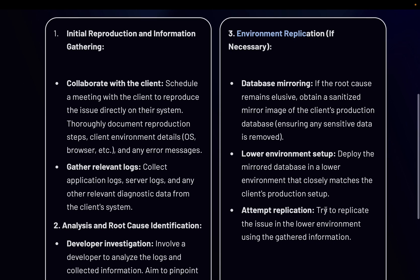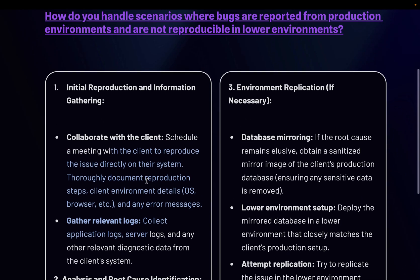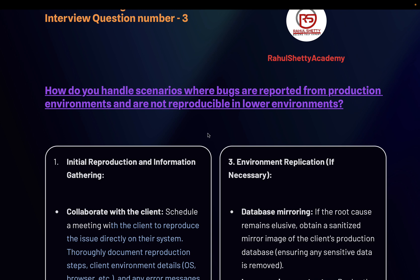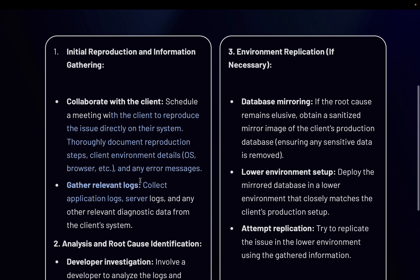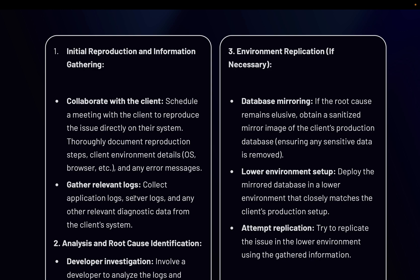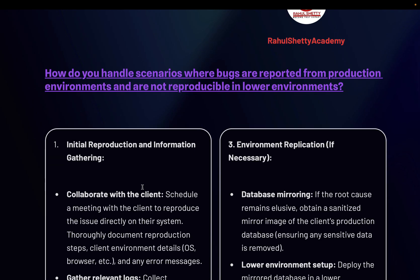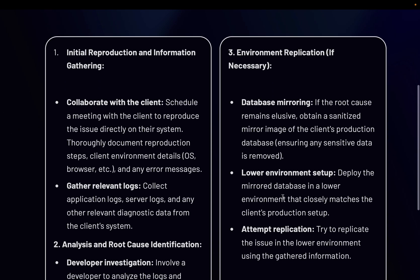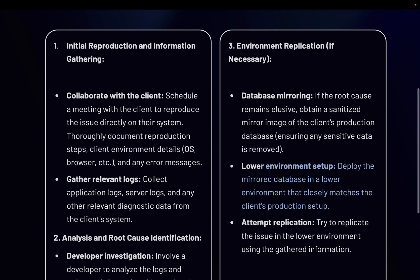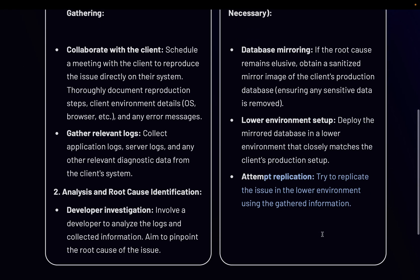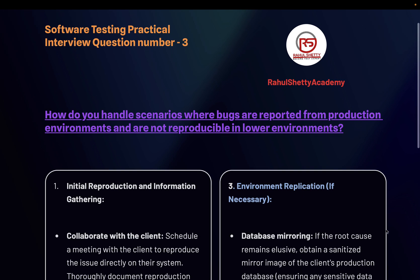Once you replicate that full environment, you will obviously see the same issue. In steps one and two, instead of touching the client's database or operating system directly, you are smartly trying to figure out the issue from application and server logs. But if you are not getting any clue, then you mirror the whole environment — including database, browser, and operating system — in your lower environment and solve it. This is the backup step. These are the different things you do when there is a bug in the client's system but not in your system. Do not go with weak answers like trying another browser or checking internet connection.